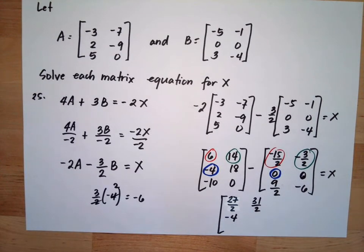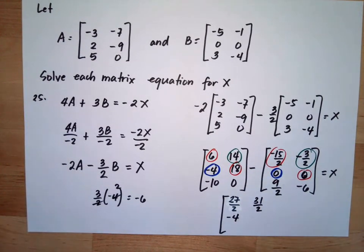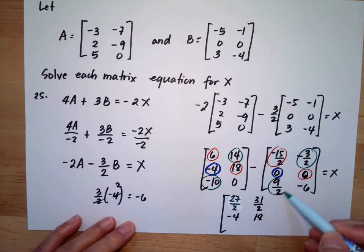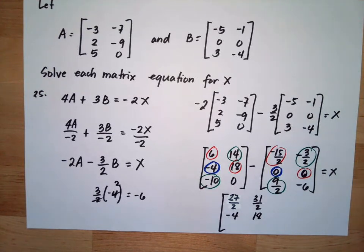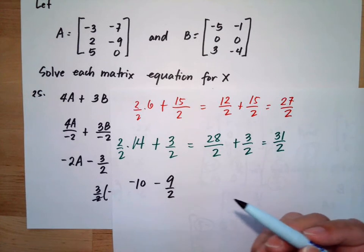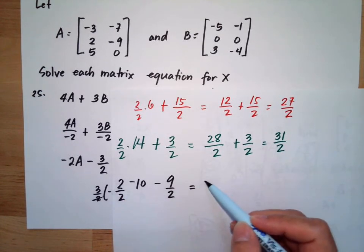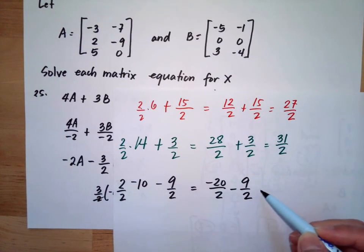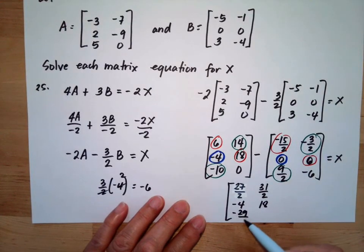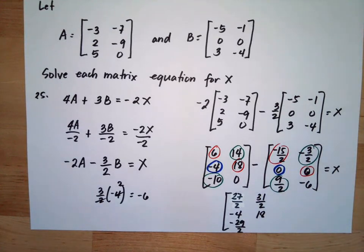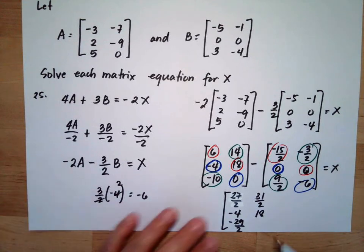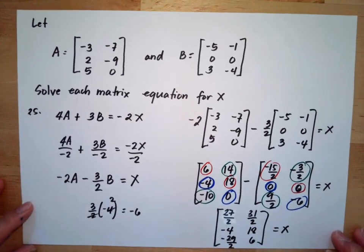Then 18 minus 0 is still 18. Next, negative 10 minus 9 over 2: getting a common denominator, negative 10 becomes negative 20 over 2, minus 9 over 2 — both negative, so we add them to get negative 29 over 2. Finally, 0 minus negative 6 becomes positive 6. So this is the equivalent of our matrix X.